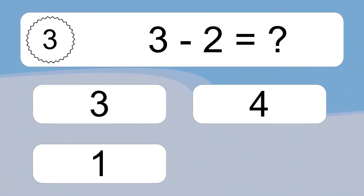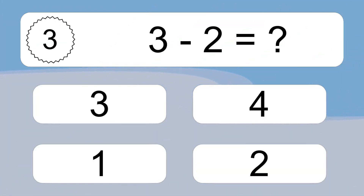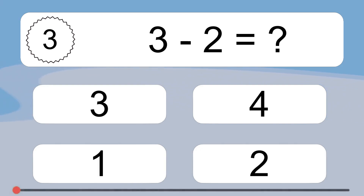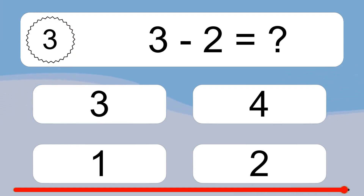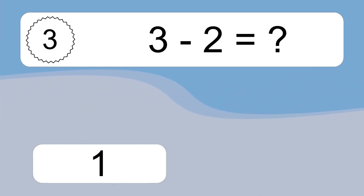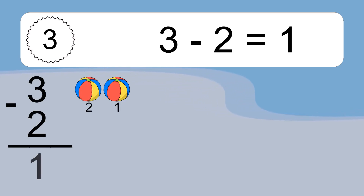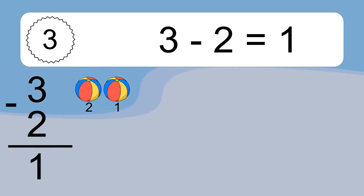3 minus 2 equals what? 3 minus 2 equals 1. Let's count it: 2, 1.